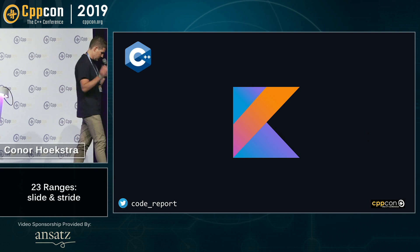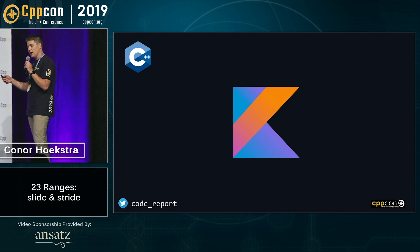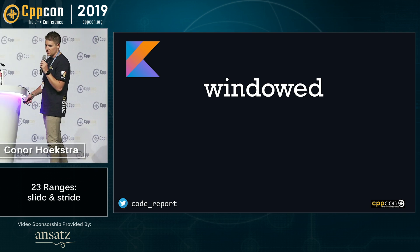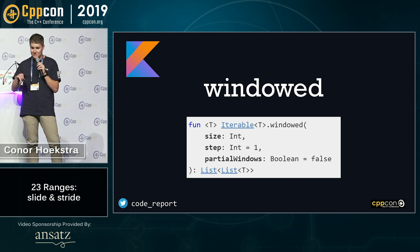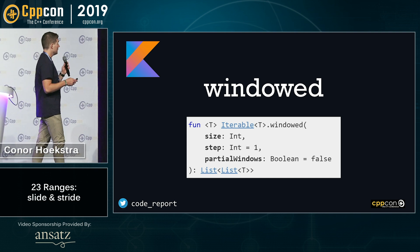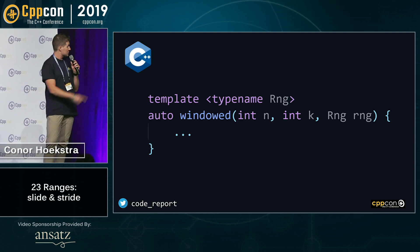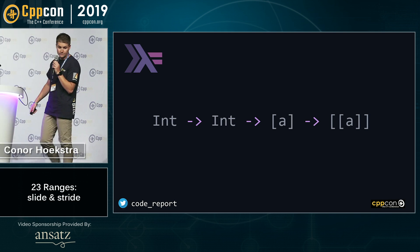Kotlin — a little shout out to Phil and JetBrains here — has an algorithm called windowed. The function declaration of windowed has two integers: size and step, where step is defaulted to one. This is what it might look like in C++: two integers n and k, and a range. And once again in Haskell, we just have an extra int in our type signature.